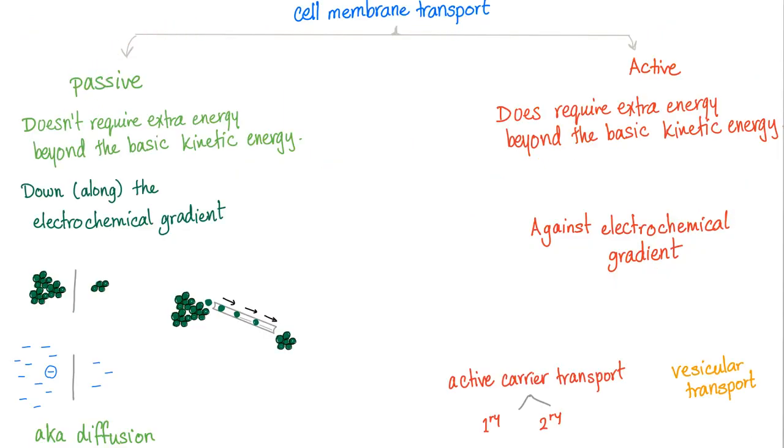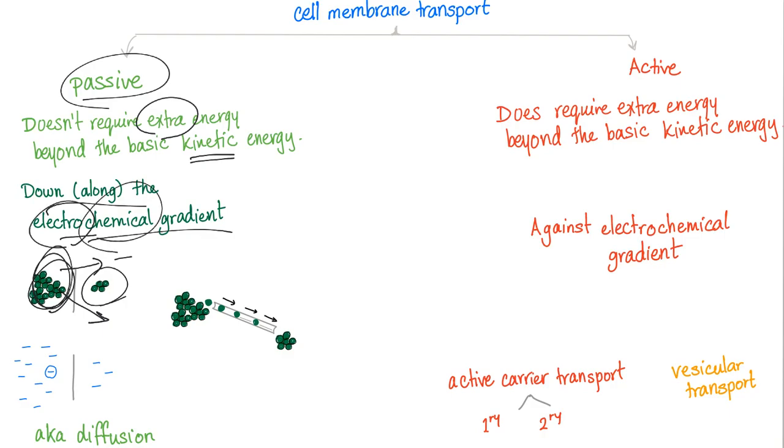Cell membrane transport is either passive or active. Passive means it doesn't require extra energy beyond the basic kinetic energy. Passive diffusion occurs down the electrochemical gradient, from higher concentration to lower concentration. Electrochemical means electrical gradient and concentration gradient combined. If these are negatives, they will repel each other, causing movement in this direction. Passive diffusion does not require ATP.